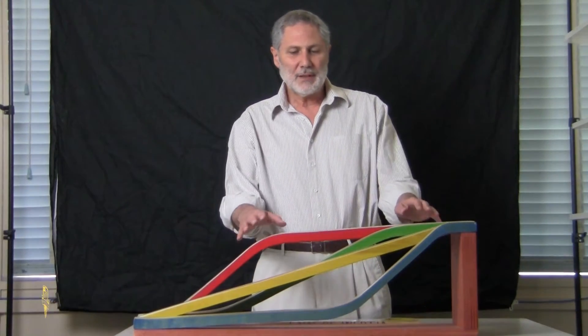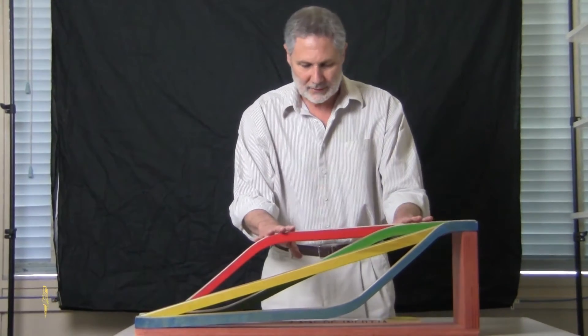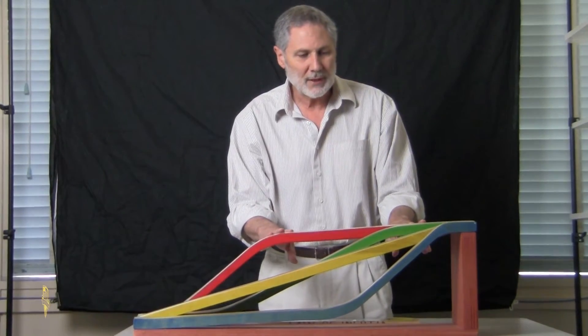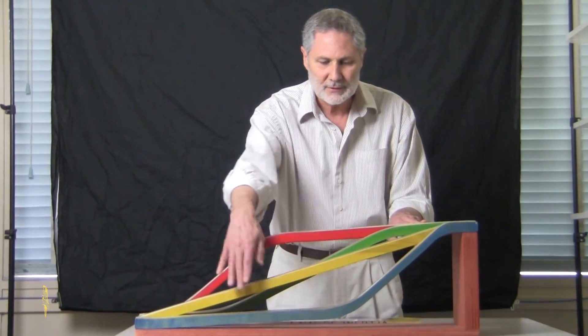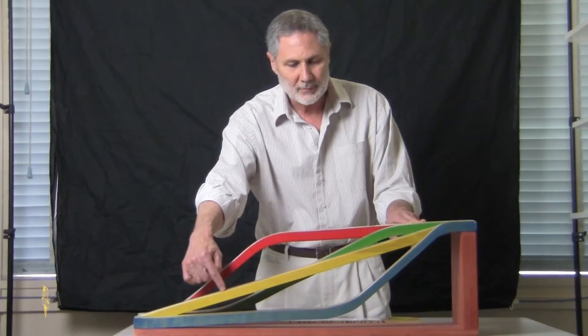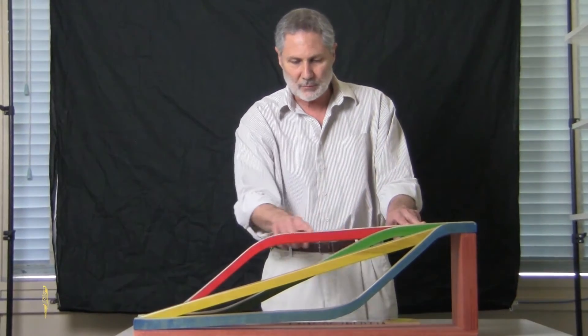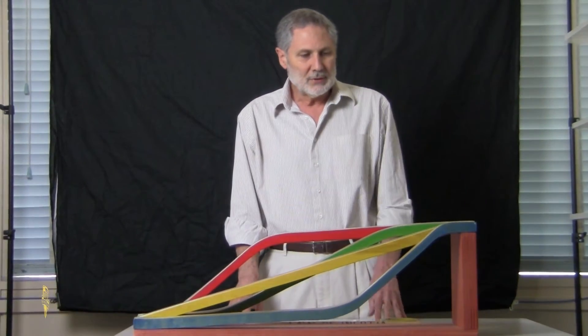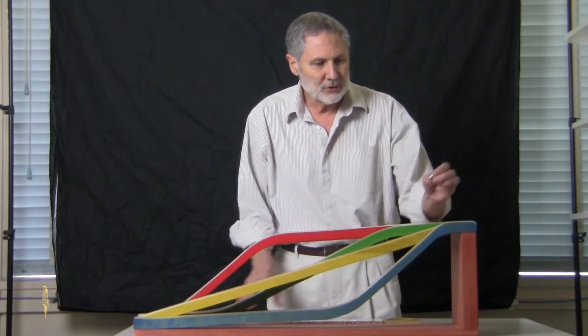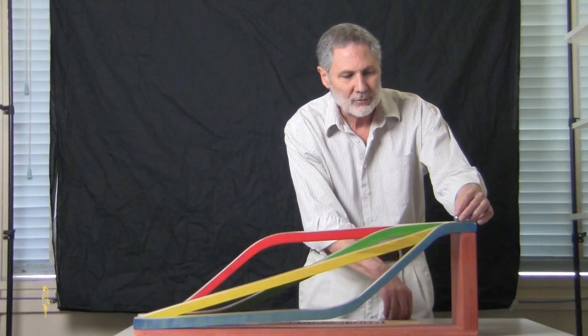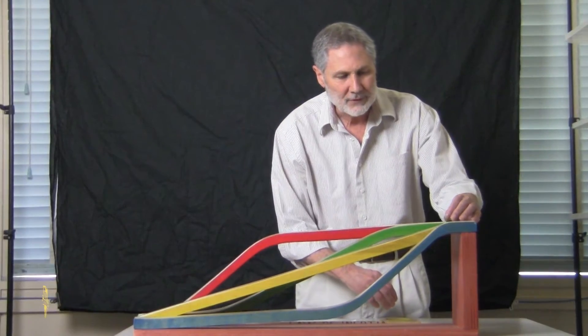We have here a commercial apparatus that has four ramps. You can see there's the blue one in front, a straight yellow ramp, then the green one here, and the red one. What we can do with this is we can release steel balls at rest at the top of these ramps.